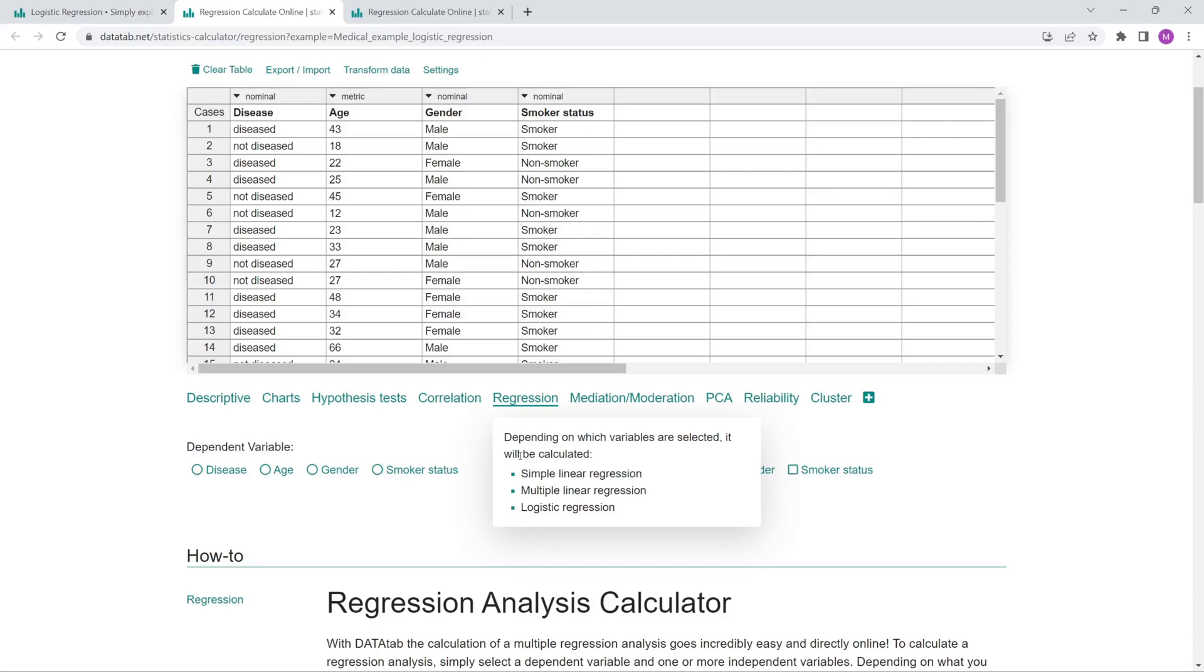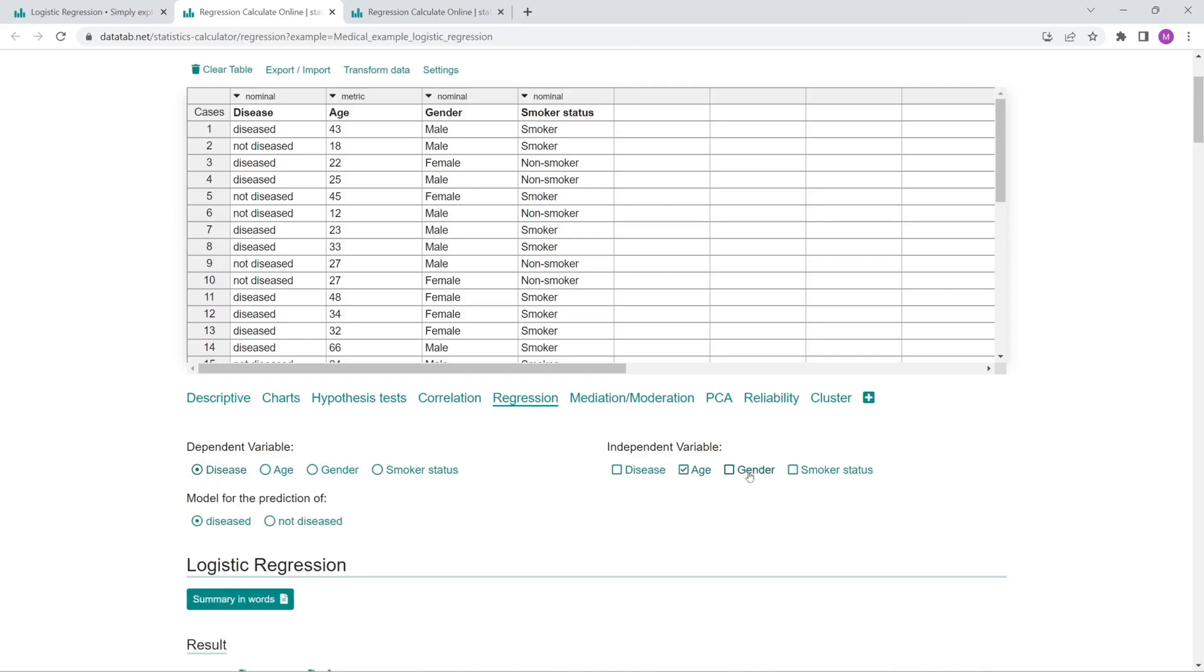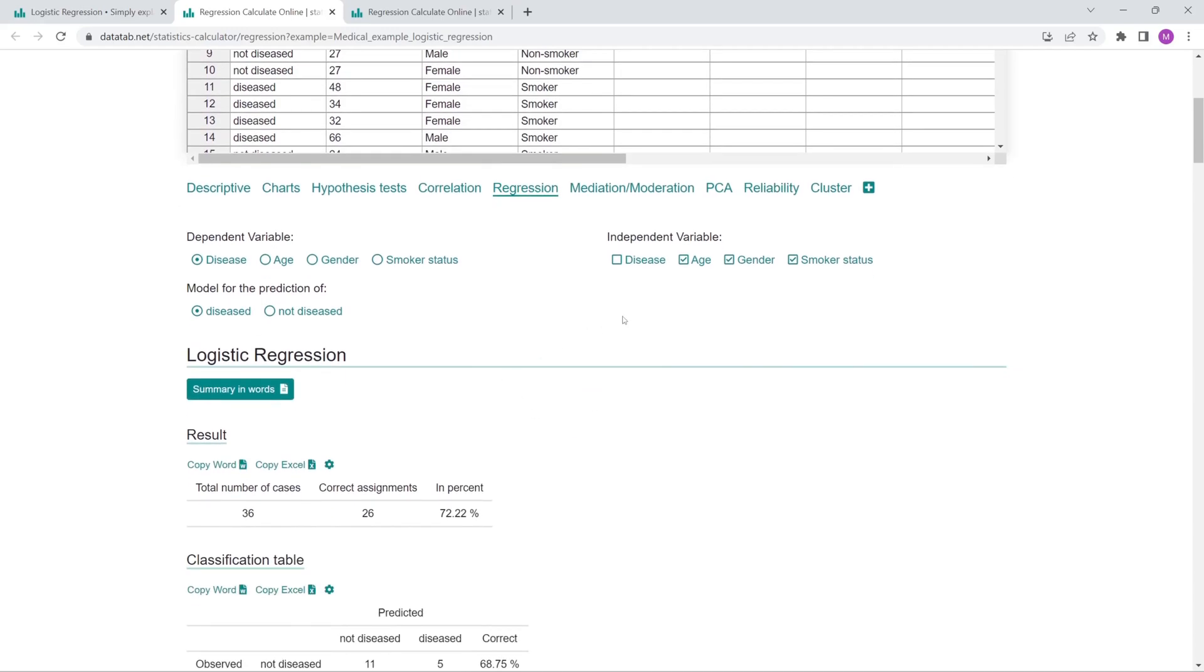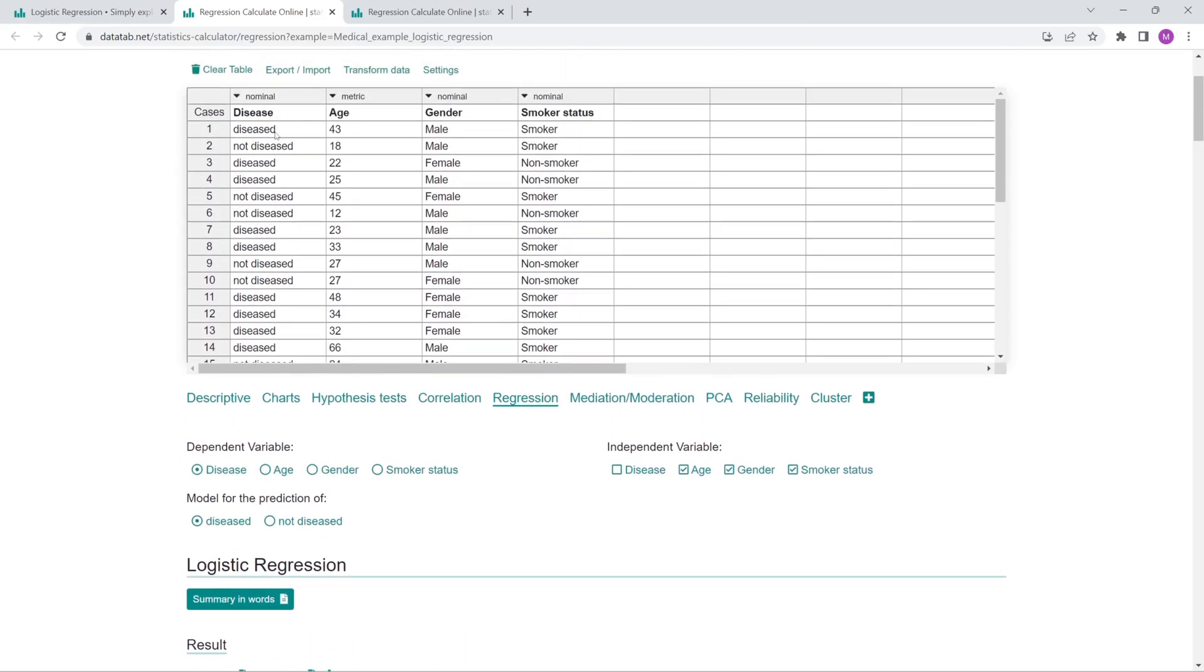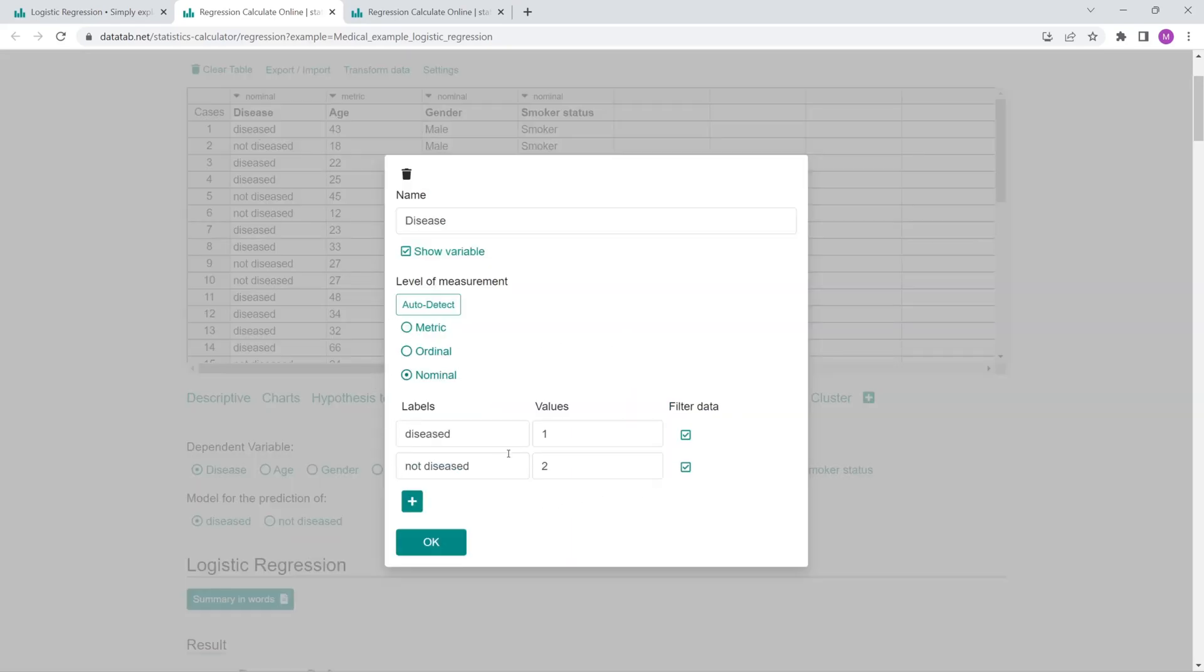We want to calculate a logistic regression, so we just click on Regression. Depending on how our dependent variable is scaled, Datadap will calculate either a logistic or a linear regression under the tab Regression. We choose disease as the dependent variable and age, gender and smoking status as the independent variables. Datadap now calculates a logistic regression for us. Now we can choose for which category we want to build the regression model. Our data could also look like this, that there is not deceased and deceased, but 0 and 1. Then we would just need to click here and enter the labels. 1 is deceased and 0 is not deceased.